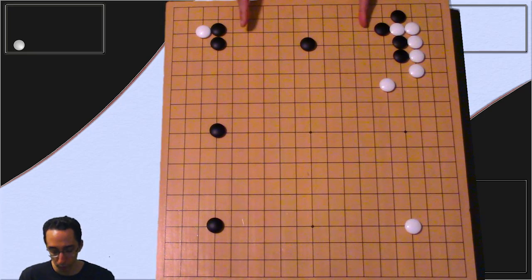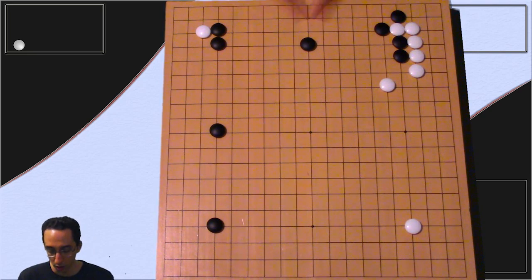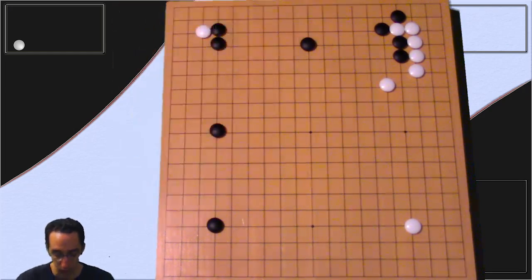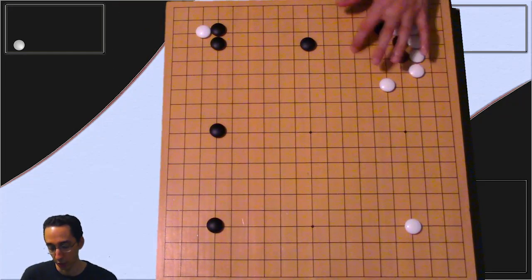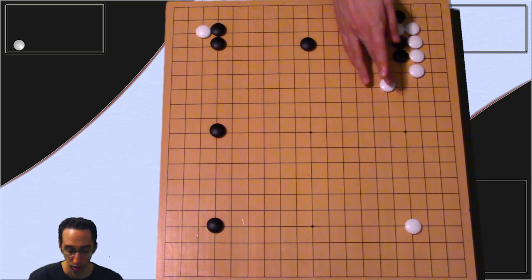then we're trying to make an area between one, two, three, four, five, six, seven, eight, nine, roughly ten lines across. On the other hand, we've also got this area, which I don't think I need to count, it's a bit larger. Plus, added to that, we've got the extra danger that there's aji here, because there's cutting stones, we're capped.